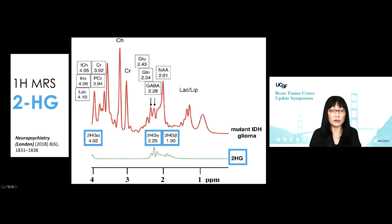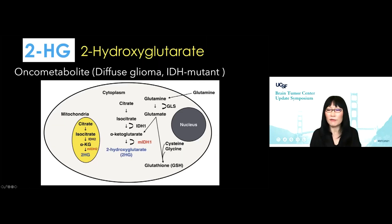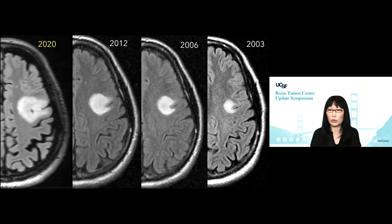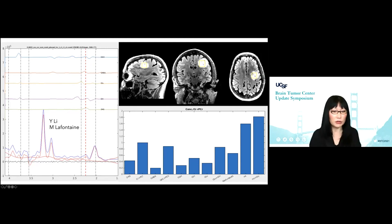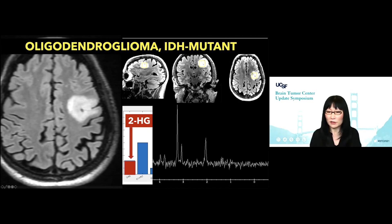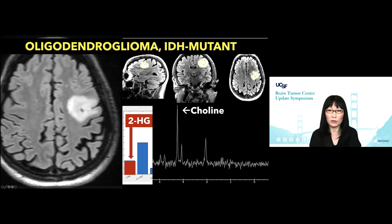One last example is 2HG — an oncometabolite for diffuse IDH mutant tumors. Here's a patient we followed for almost two decades with a growing lesion. Our outstanding researchers did 2HG spectroscopy and found it, and our surgeons — Dr. Berger took the patient to the OR. This is an oligodendroglioma IDH mutant, but you already know that from the spectroscopy. The proton spectroscopy shows super high choline, so we already knew this was going to be a highly proliferative process — an oligodendroglioma with IDH mutation showing 2HG oncometabolite.